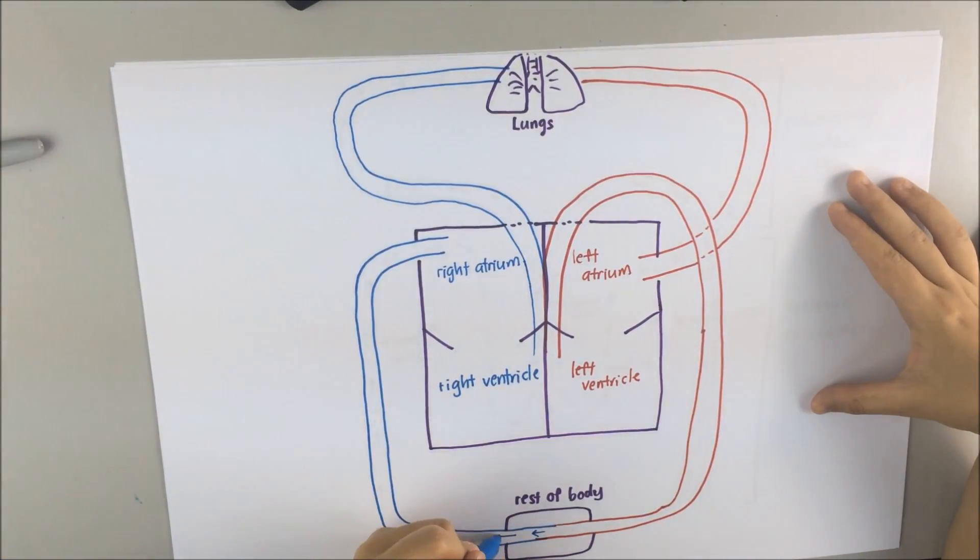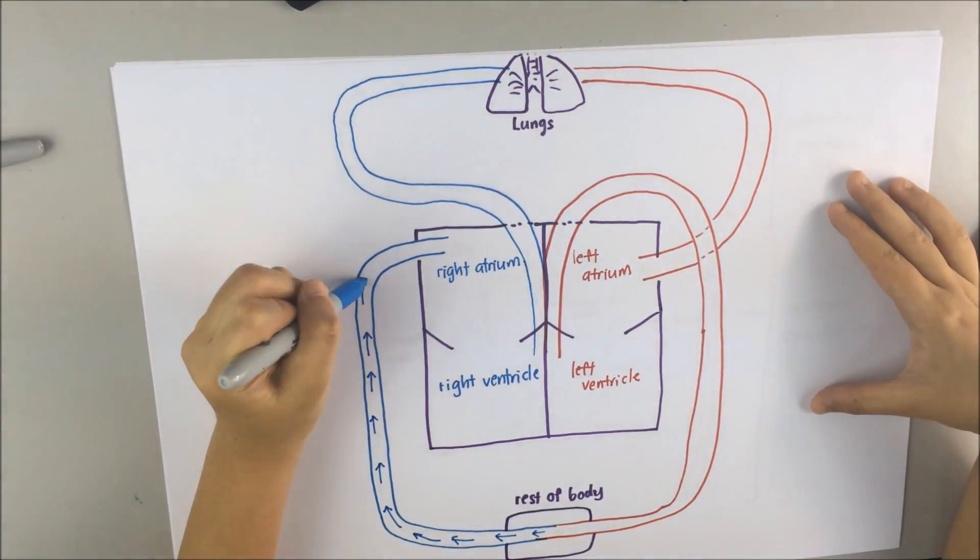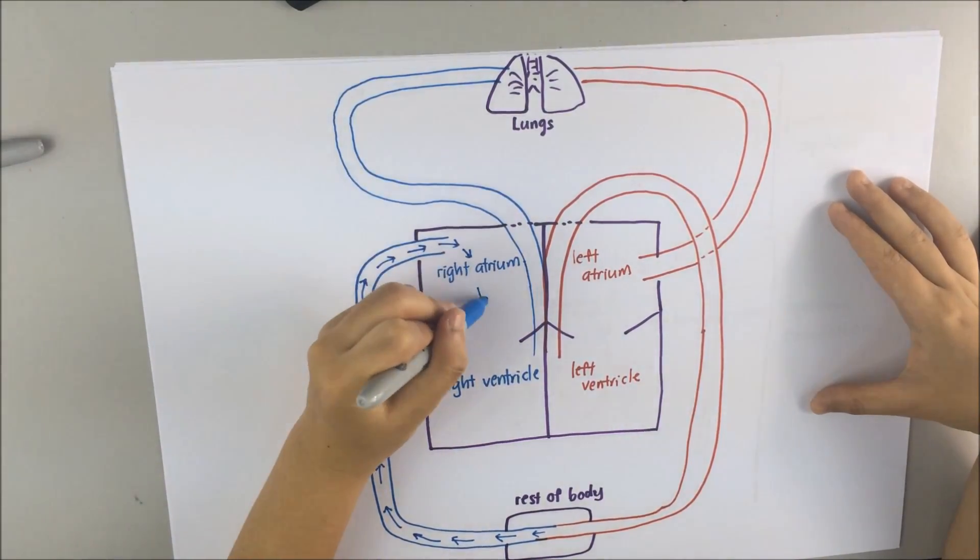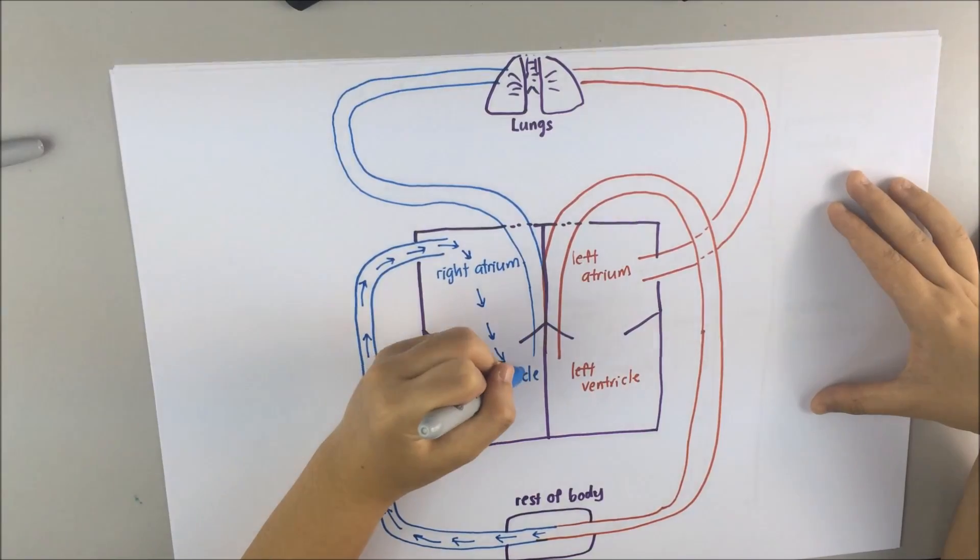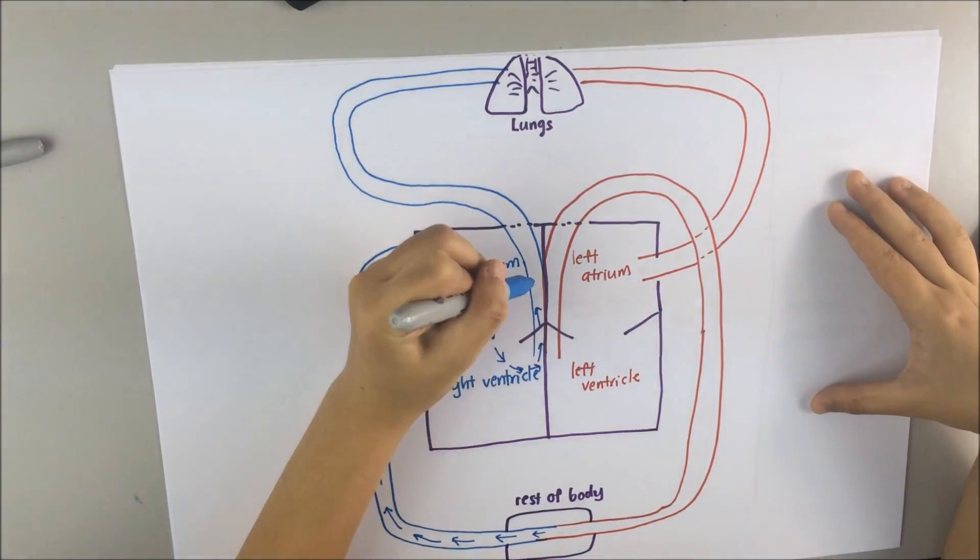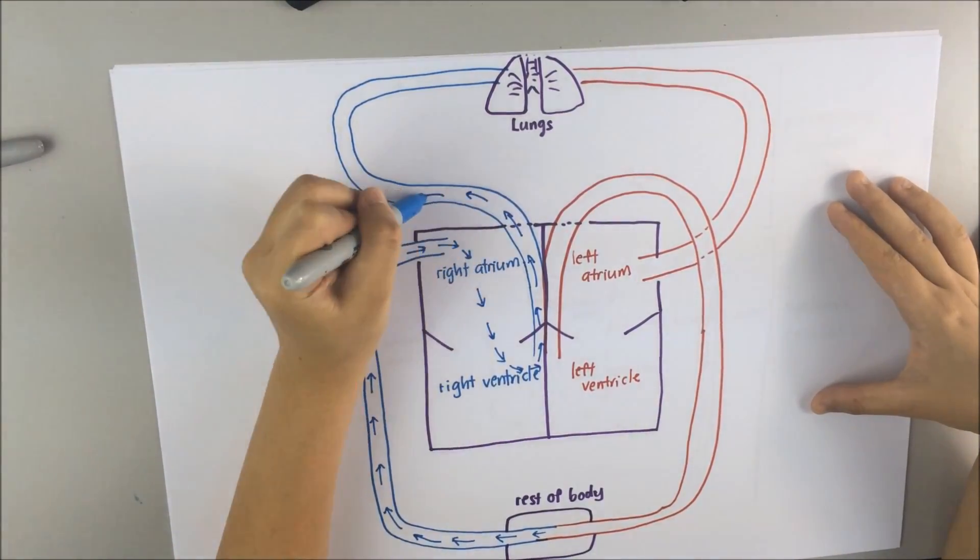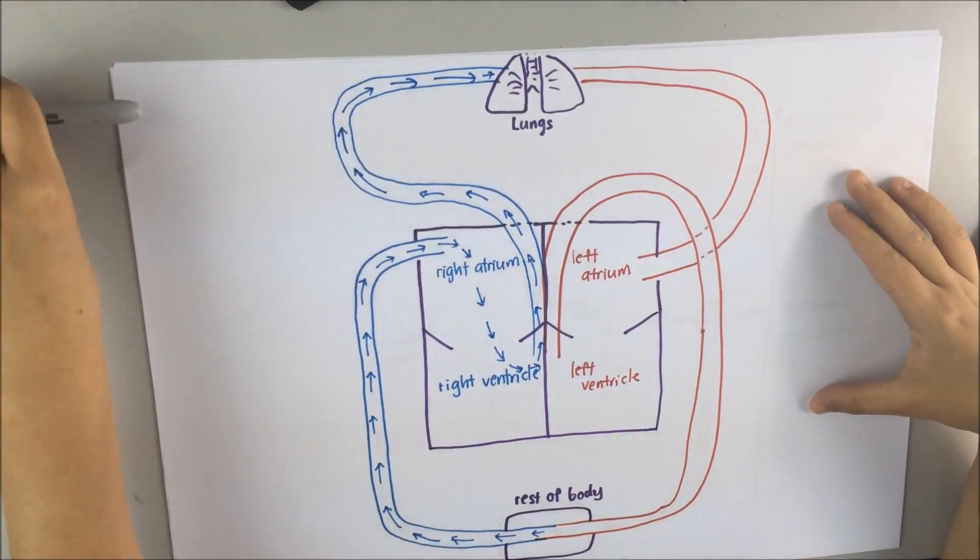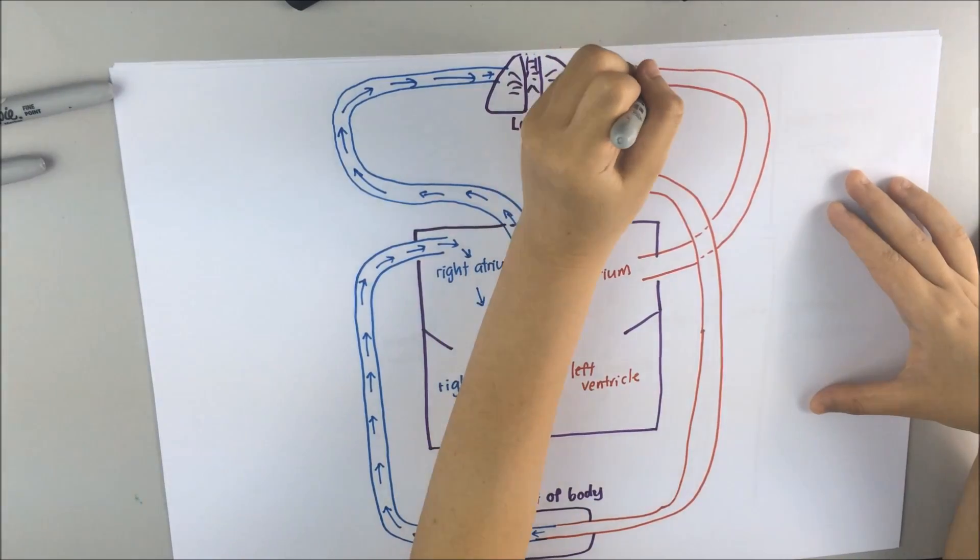The deoxygenated blood from the body tissues enter the heart through right atrium, then into right ventricle. As right ventricle contracts, blood is pumped out into lungs for oxygenation, which means to add oxygen to the blood.